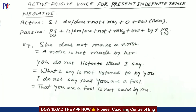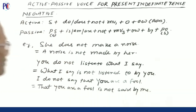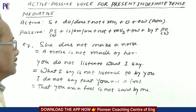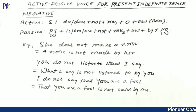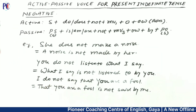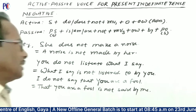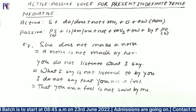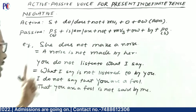Now, the negative sentences to be changed into passive in the present indefinite tense. In the active, the structure uses 'do' or 'does' with 'not', followed by main verb one, object, and other adverbs. In passive, the object becomes the passive subject. For example: 'She does not make a noise.' The object is 'a noise'. Passive: 'A noise is not made by her.'